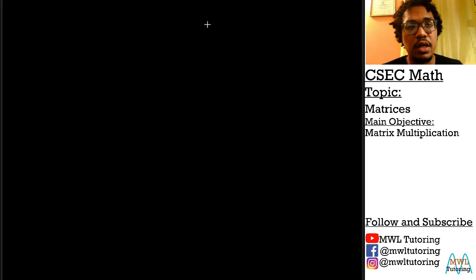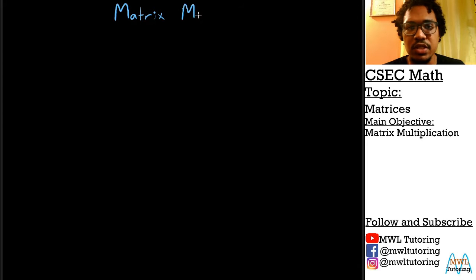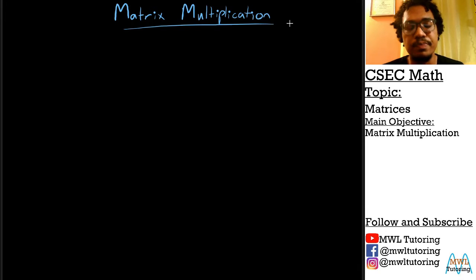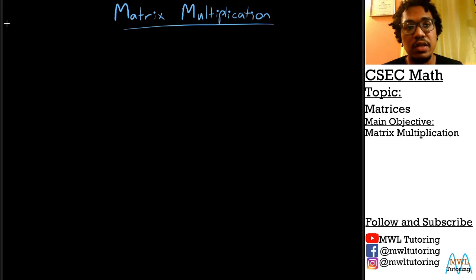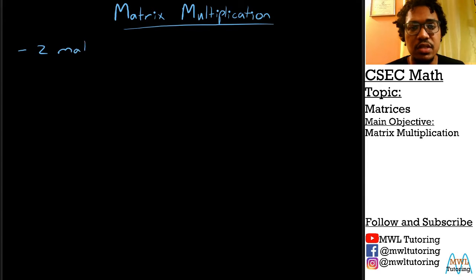Let's move over onto this board here. We want to look at matrix multiplication. Matrix multiplication is a little bit more tricky than scalar multiplication because, first off, we have certain conditions for matrix multiplication to occur. For matrix multiplication to occur, two matrices must be compatible.